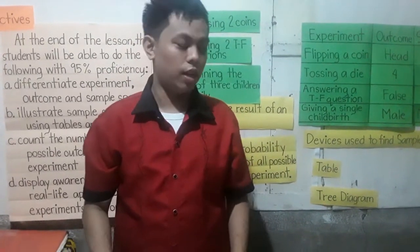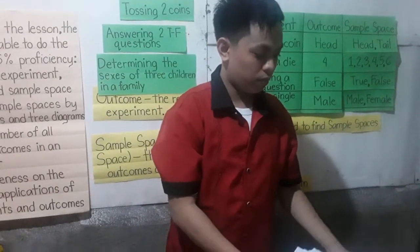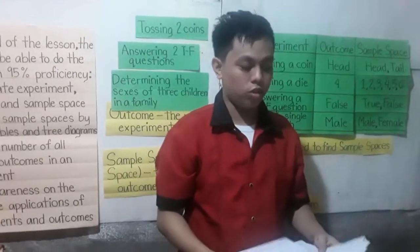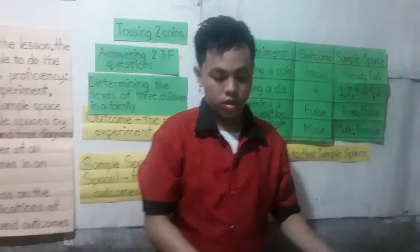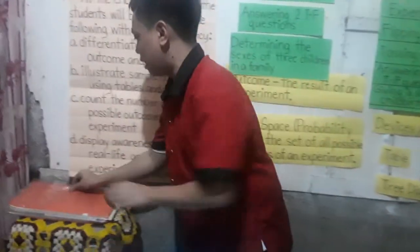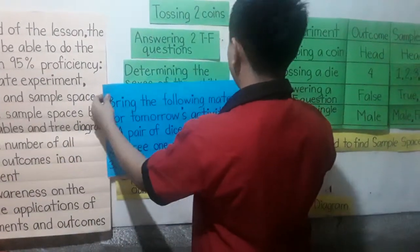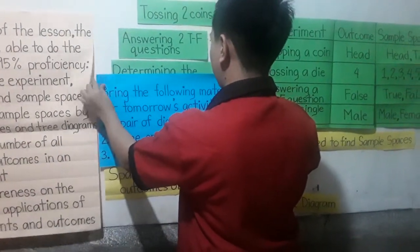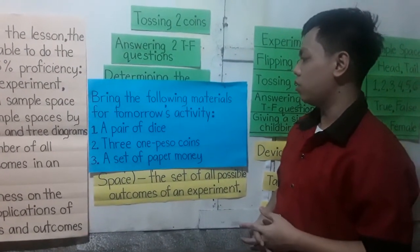To know better about the lesson, I'll give you a seat work by pair. Choose your pair. Don't be noisy. Don't drag the chair when choosing your pair. Since we have no more time, please copy this assignment. Bring the following materials for tomorrow's activity: a pair of dice, three coins, and a set of play paper money.